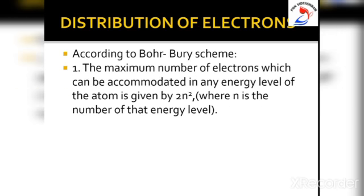According to the Bohr-Bury scheme, the maximum number of electrons which can be accommodated in any energy level of the atom is given by 2n², where n is the number of that energy level. Let us calculate the maximum number of electrons which can be put in the first four energy levels of an atom.